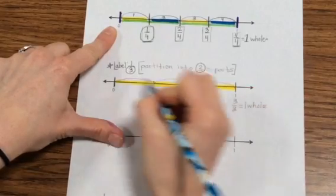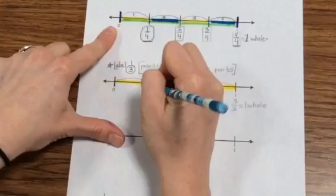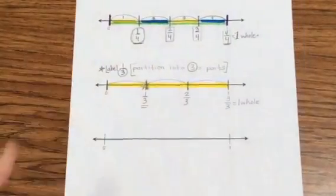And if I'm labeling one-third on the number line, I would simply need to label this part on the number line.